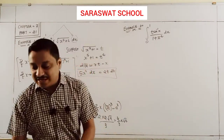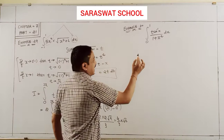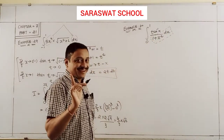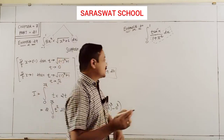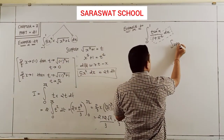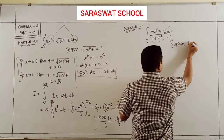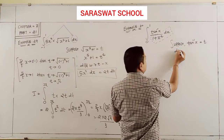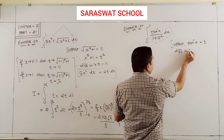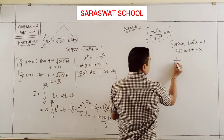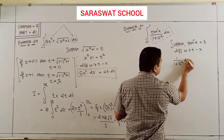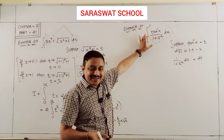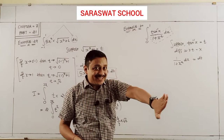From 0 to 1, suppose tan⁻¹x equals t. Taking the differentiation with respect to x gives 1/(1+x²) dx = dt. That's why I am making this substitution. Now the limit must change according to the suggestion.